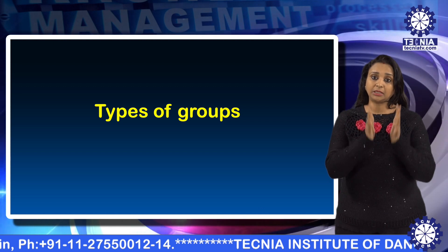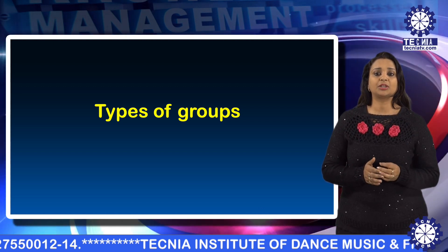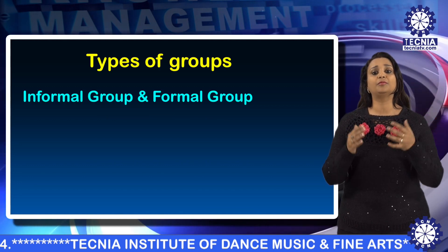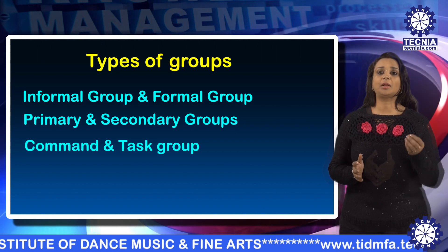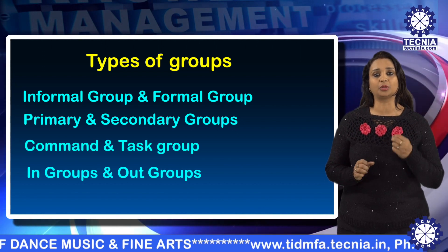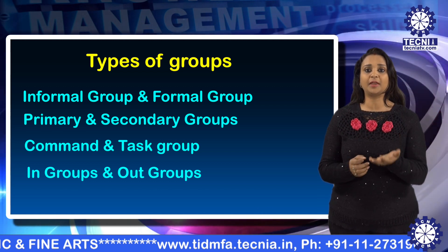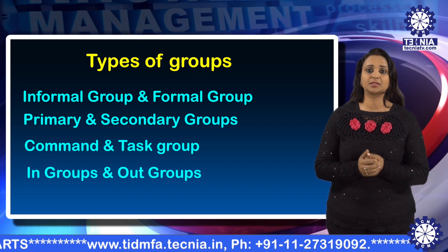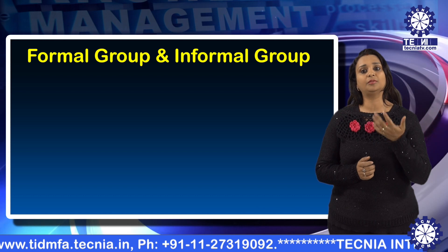Members should be aware that they are part of a group and perceive themselves as such. Now we need to discuss the types of groups. Analytical classifications of the group may be: informal and formal groups, primary and secondary groups, command and task groups, and in-group and out-group. Each type has different features and different effects on its participants.